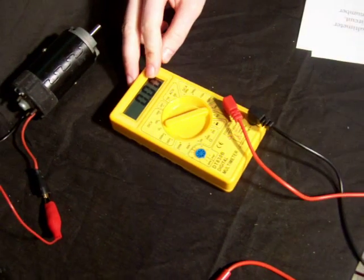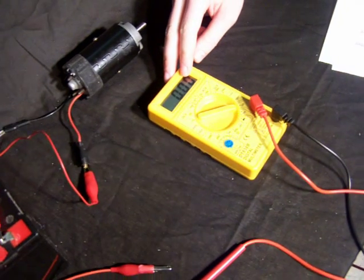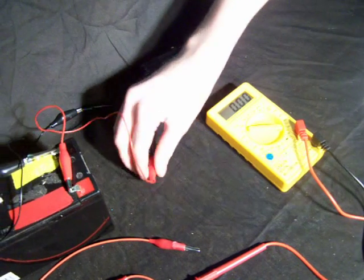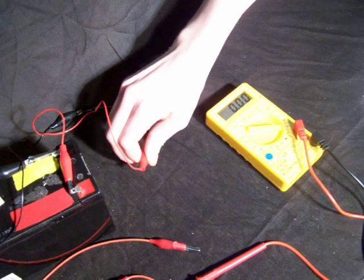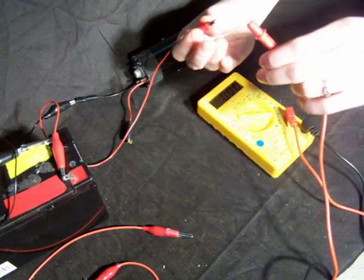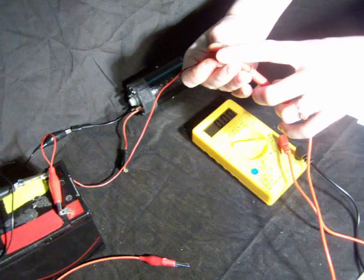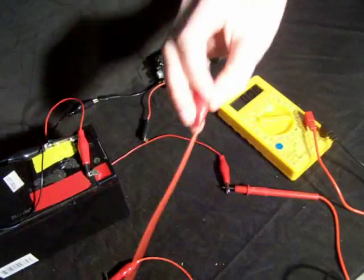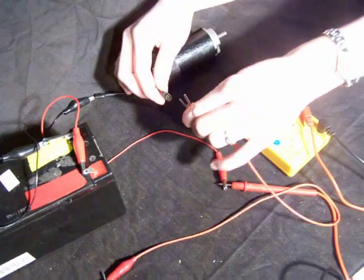We will use alligator clip leads to connect the multimeter to the motor circuit. To do this, I remove the positive battery connection from the motor and then clip the alligator clip lead to the positive probe and an alligator clip lead from the common probe to the other motor terminal.